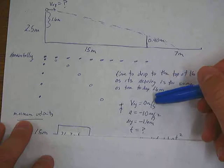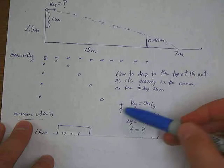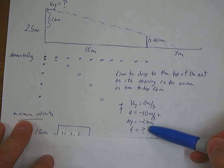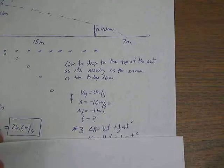So here's what I know. My initial velocity is zero because it's just dropping. It's not being thrown up or down. Acceleration of gravity is 10. I'm saying up is positive, so down to be negative. So the change of position is in the negative direction, 1.6 meters, and I'm trying to find the time.